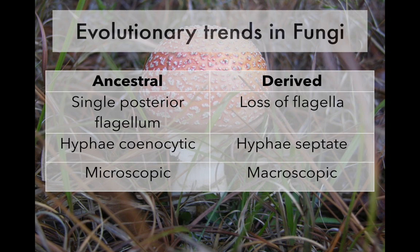Tying into that, the ancestral lineages of fungi are microscopic — you've probably never encountered them unless looking through a microscope. Whereas most fungi you're familiar with, like mushrooms or packets of yeast from the store, are macroscopic and visible to the naked eye. We'll get into why that is as we talk about the diversity of fungi later on.